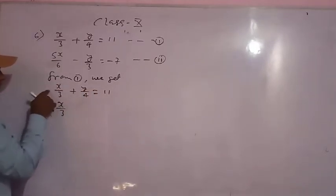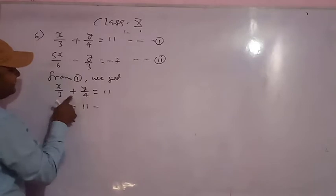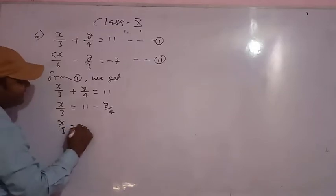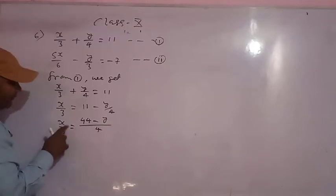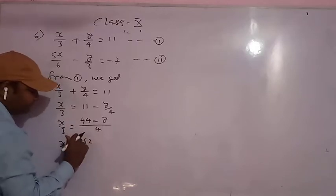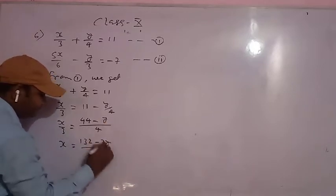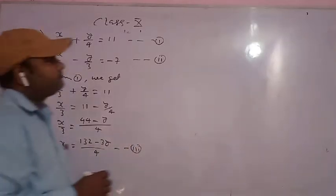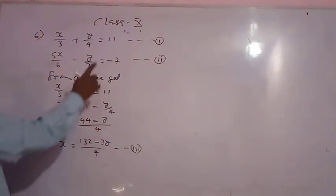We will keep x by 3 on the left side and take y by 4 to the right side. It was plus, so now it will be minus. Take LCM 4: it will be 44 minus y. Now 3 goes to the right side: 3 times 44 is 132. So x equals 132 minus 3y by 4. This is equation number three.